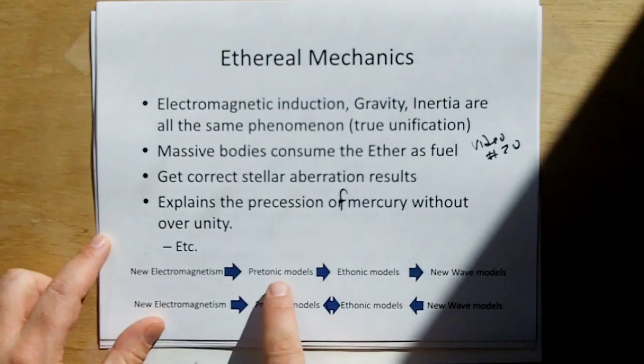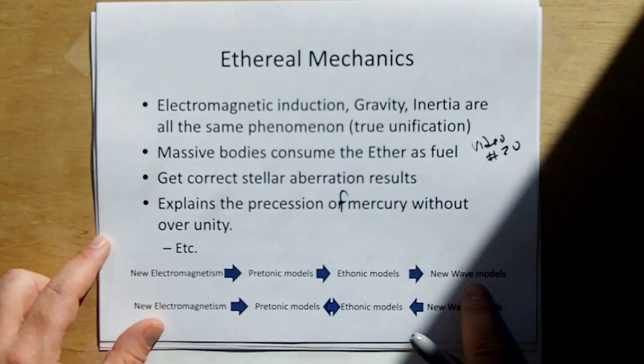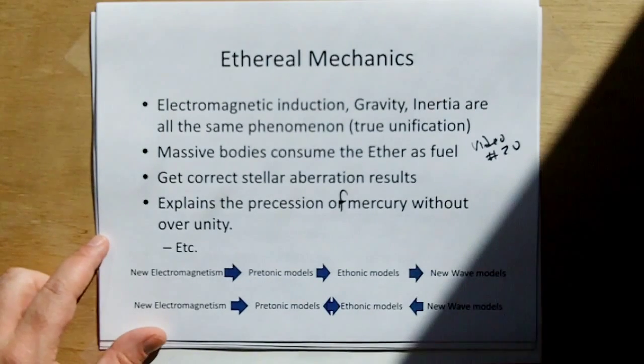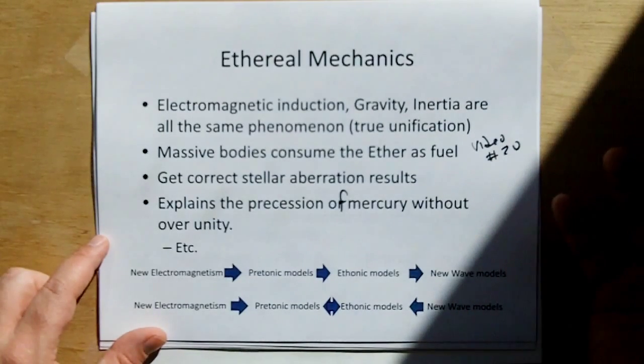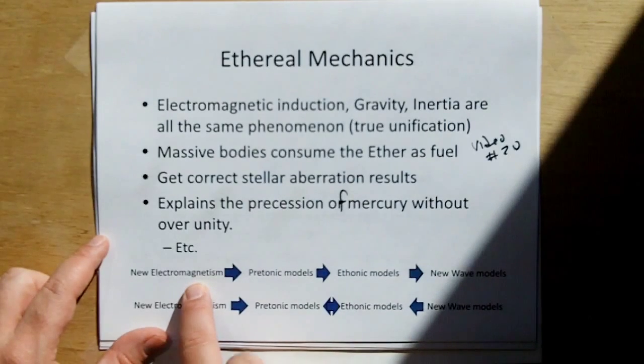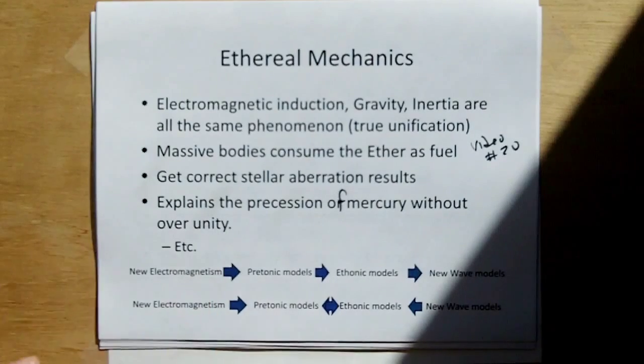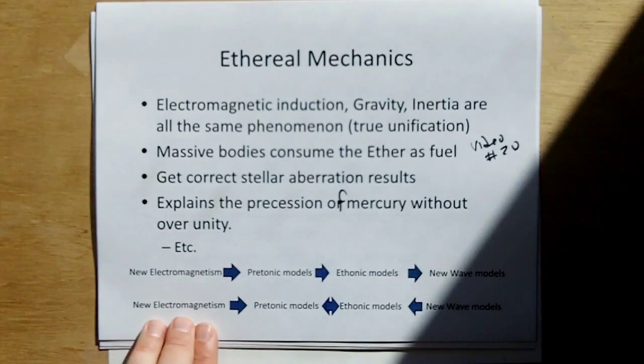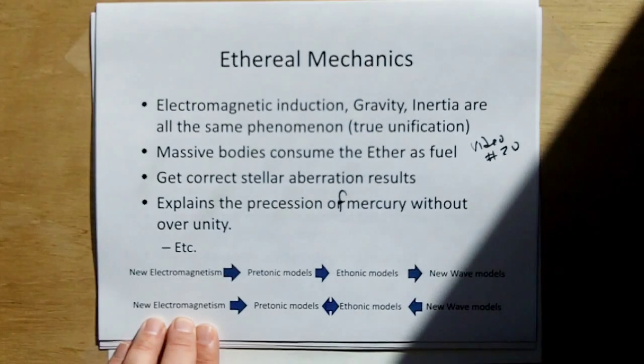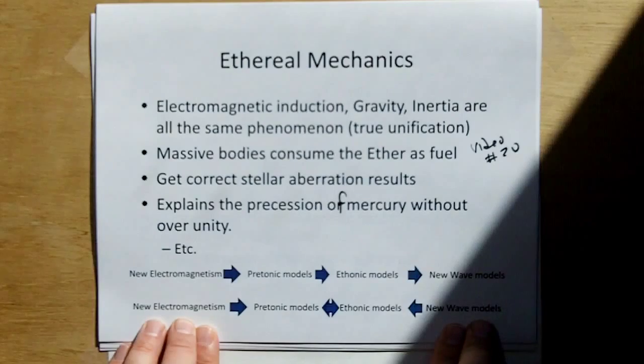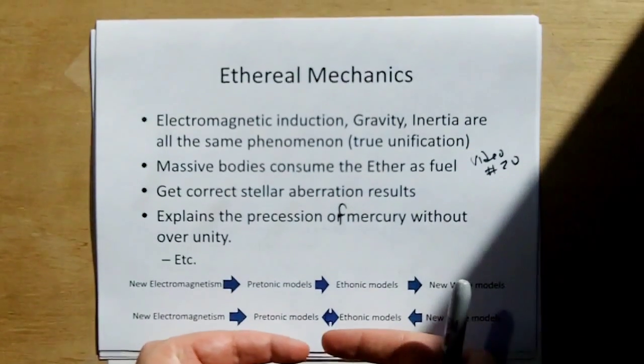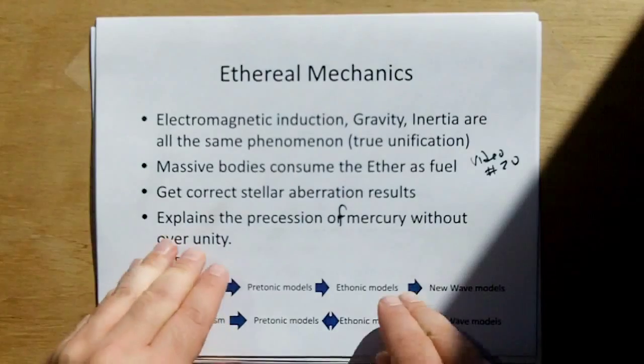And so where I was going in the beginning is I was trying to go in a straight line from new electromagnetism to the pre-tonic models, to the eutonic models, to a new wave model. But unfortunately I realized that I need to have divergence of fields. And these do not predict it. The experiments that are the foundation for this are not able to measure this phenomenon. Because we need actual propagation in space, not bench-top experiments. Therefore the new route that we're going is we already have new electromagnetism, which are bench-top experiments derived empirical models. And we're going to develop these new wave models and hopefully work our way down to the more fundamental pre-tonic and e-tonic models.